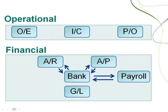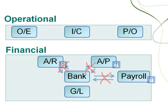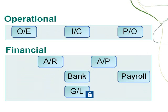You should not lock bank services if checks and receipts are still being processed to the period in other modules. Similarly, you should not lock AR, AP, or payroll if you need to post bank reconciliations or reversals. You should also make sure you create and post all outstanding GL batches for a fiscal period before you lock it for GL.